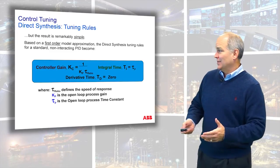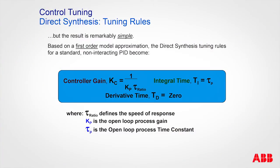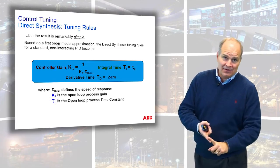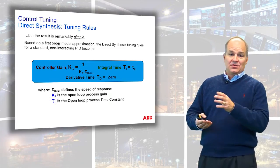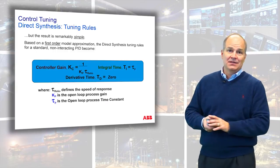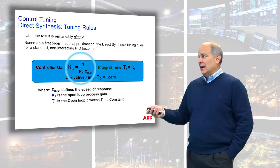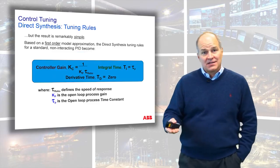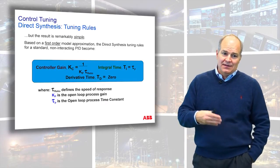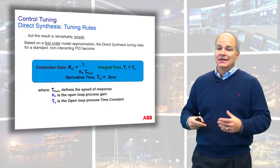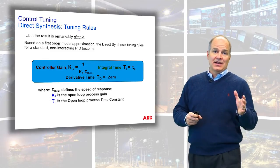If you're dealing with a first-order model — the most simple model, with process gain and time constant — you don't even need derivative. The tuning rule simplifies down to a straightforward formula: a first-order model with a standard PI algorithm, adjusted by tau ratio where a small number is fast and a big number is slow. Most controllers work in percent, so if you calculate your process gain in process units, you'll need to convert to percent based on the transmitter range. Make sure you know how the manufacturer is normalizing the gain.